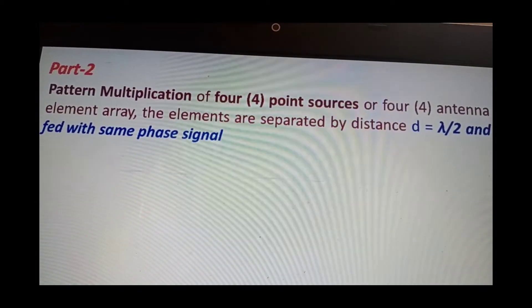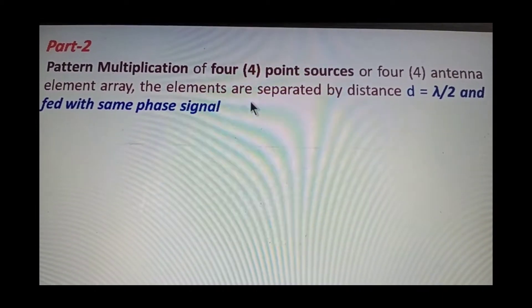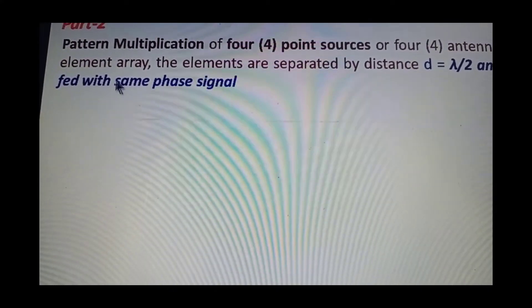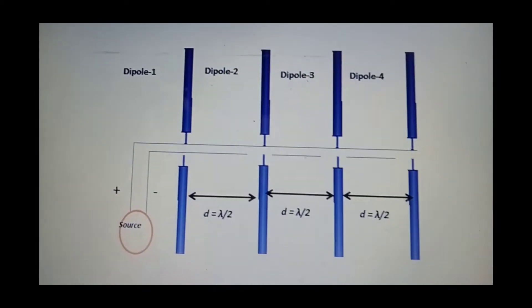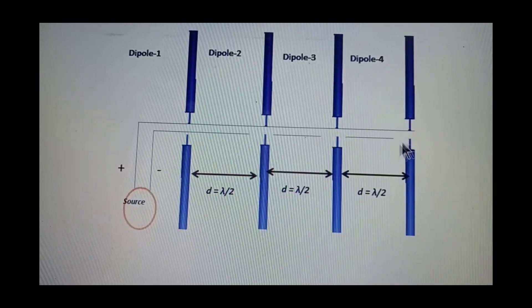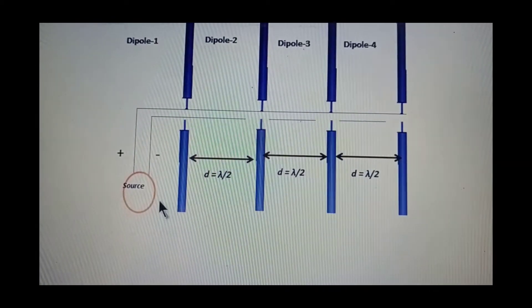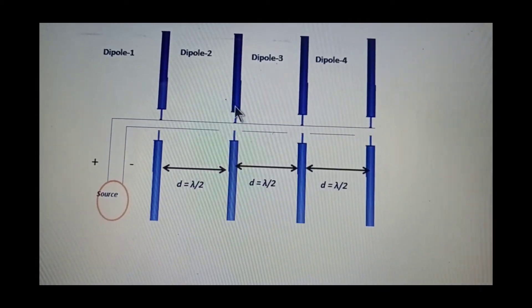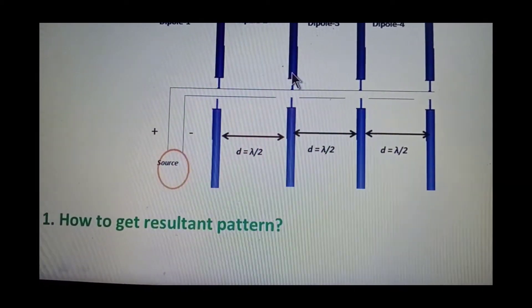The problem statement is pattern multiplication of four point sources — four antenna elements separated by lambda by two, and all antenna elements are fed with in-phase signals, meaning the same phase signal. There are four elements (dipoles 1, 2, 3, 4) separated by d equal to lambda by two. The sources supply in-phase signals to all elements. Now we discuss how to get the resultant pattern.